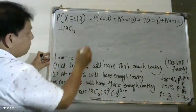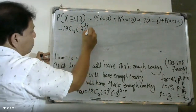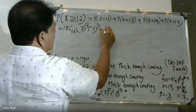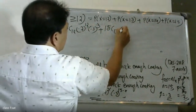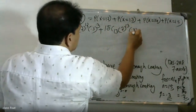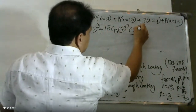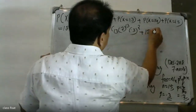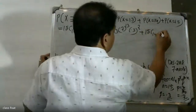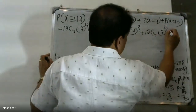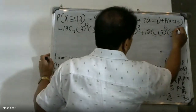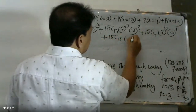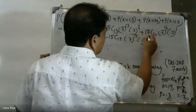Expanding each term: 15C12 * 0.7 raised to 12 * 0.3 raised to 3, plus 15C13 * 0.7 raised to 13 * 0.3 raised to 2, plus 15C14 * 0.7 raised to 14 * 0.3 raised to 1, plus 15C15 * 0.7 raised to 15 * 0.3 raised to 0.